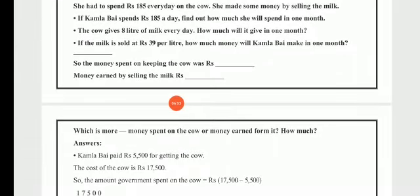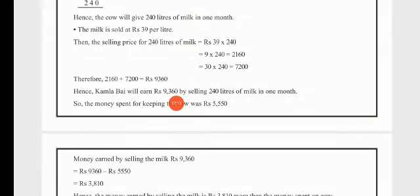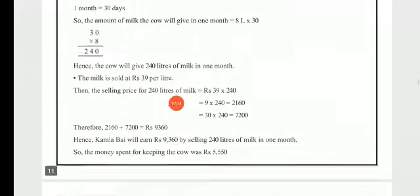If the milk is sold at Rs. 39 per liter, how much money will Kamla Bhai make in one month? In one month the cow gives 240 liters of milk, and the price is Rs. 39 per liter. So 39 multiplied by 240 equals Rs. 9,360. Kamla Bhai will earn Rs. 9,360 in one month.